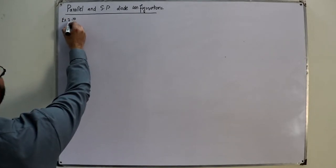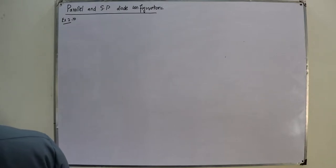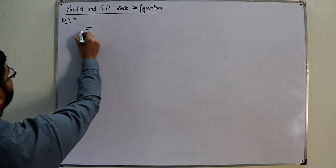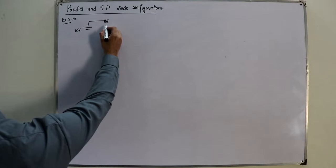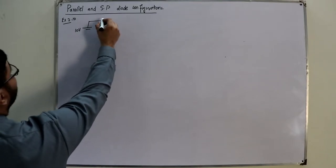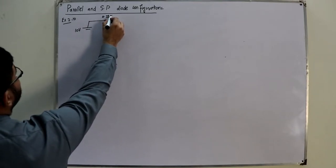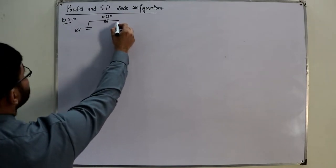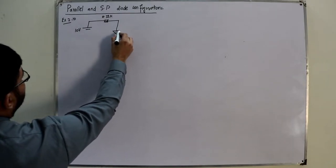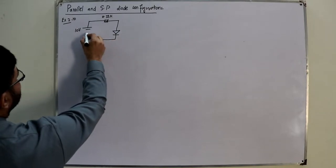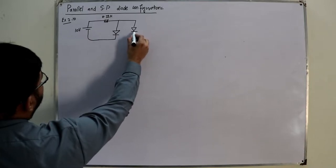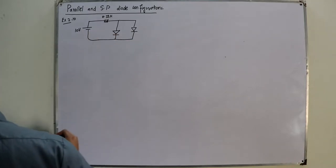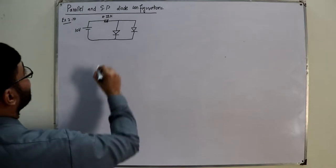Example 2.10: you are given a circuit with a 10-volt positive source, then a resistor of 0.33 kilo-ohms, then a diode. After that is a series circuit, then you have a parallel diode. This is silicon diode 1 and this is silicon diode 2.